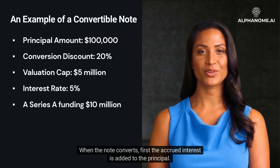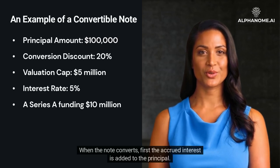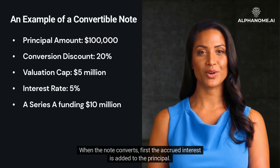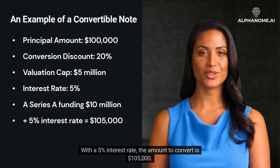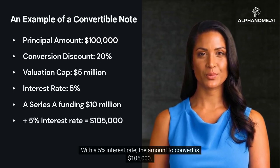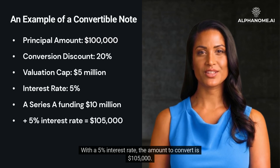When the note converts, first the accrued interest is added to the principal. With a 5% interest rate, the amount to convert is $105,000.